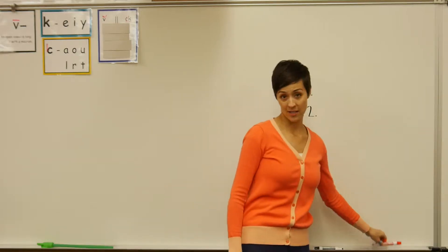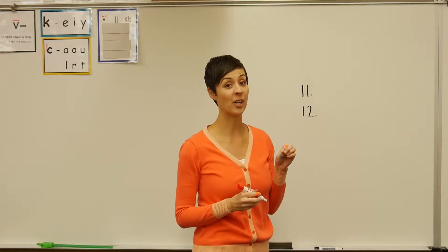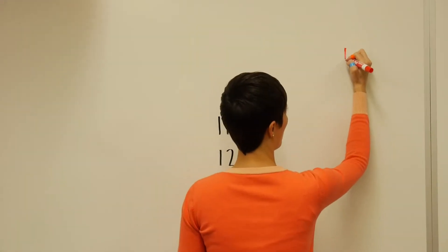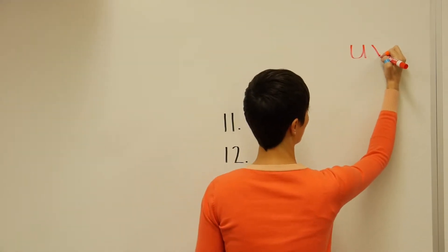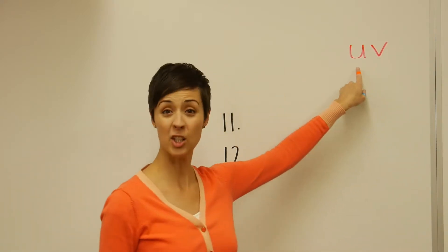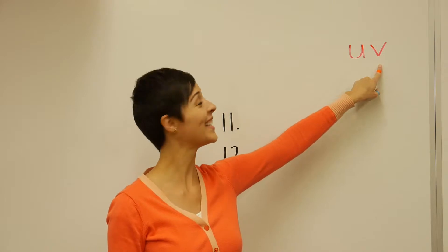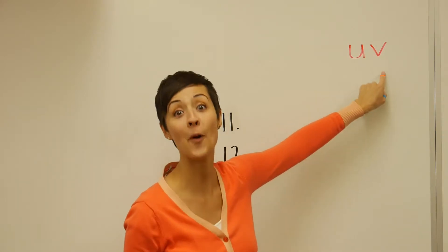When my daughter Isabel was in kindergarten, she used to spell the word of like this. And she spelled it U-V because that's what it sounds like. But guess what? This is wrong.